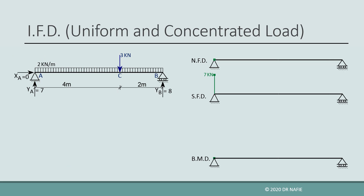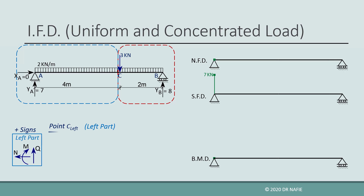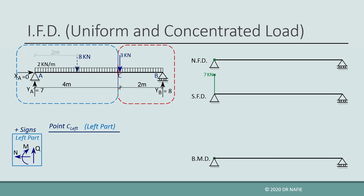Next, we evaluate the internal forces at the next critical point, which will be just to the left of the 3 kilonewton concentrated load located at point C. We follow the same procedure by dividing the beam into two parts and using the left part. We will convert the distributed load in the left part to an equivalent concentrated force, using only the portion to the left of point C with a length of 4 meters. The equivalent force will be 2 kilonewtons per meter multiplied by 4 meters, giving 8 kilonewtons located 2 meters from point A.